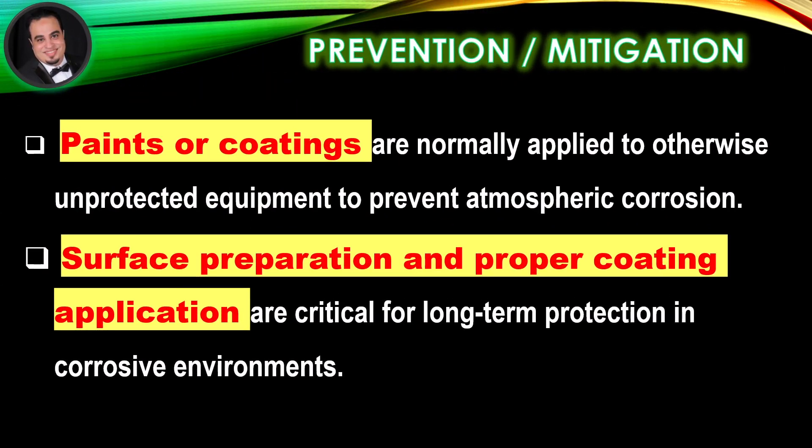Prevention and mitigation: paints or coatings are normally applied to otherwise unprotected equipment to prevent atmospheric corrosion. Surface preparation and proper coating application are critical for long-term protection in corrosive environments.